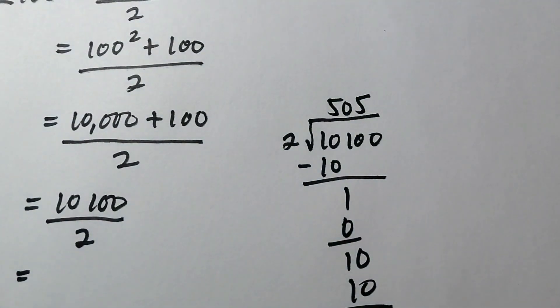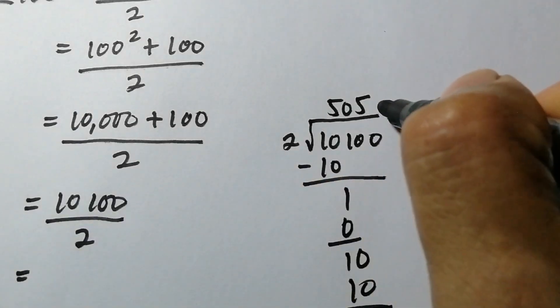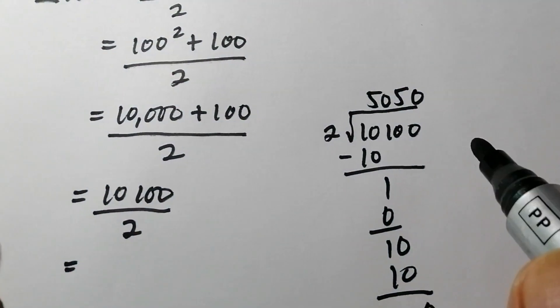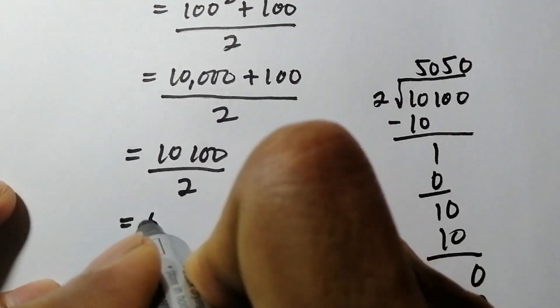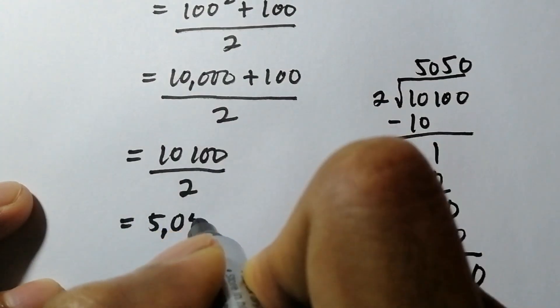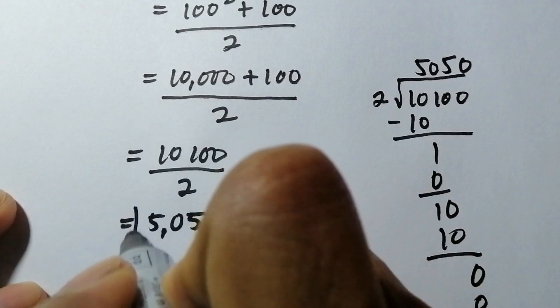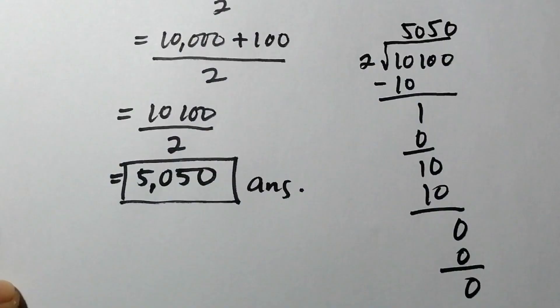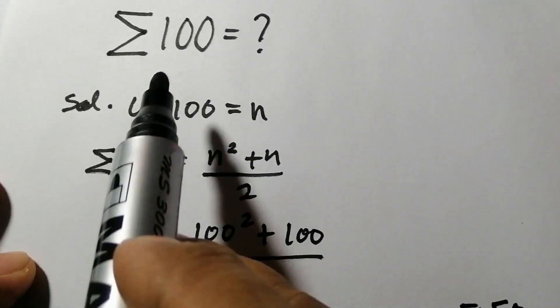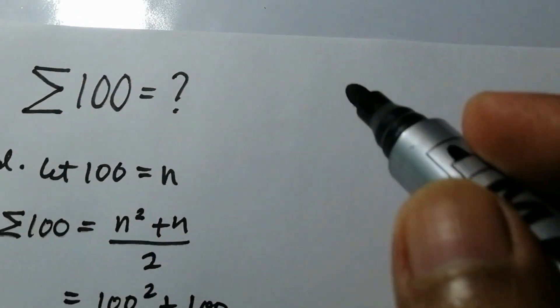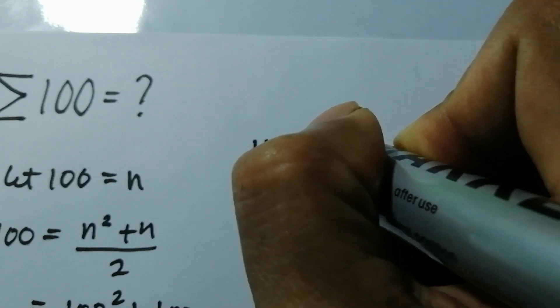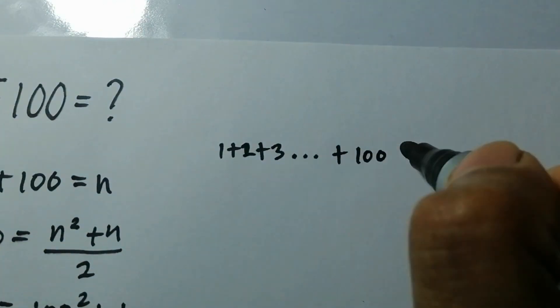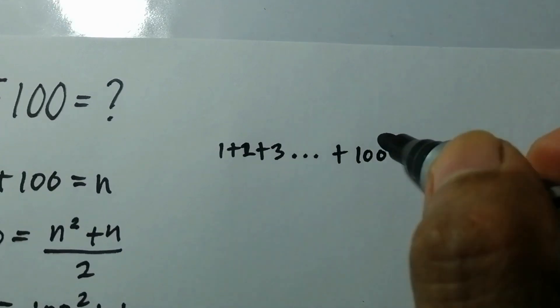So our answer is 5,050. This is our final answer. Instead of computing this by using 1 plus 2 plus 3 up to plus 100, which takes a lot of time and effort before you get the answer of 100 consecutive numbers.